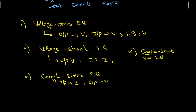For current-shunt feedback: the first term 'current' indicates sampling at the output side, so output is current. The second term 'shunt' indicates mixing at the input side, so input is also current. That is how we can remember the output and input signals for each of the four feedback topologies.